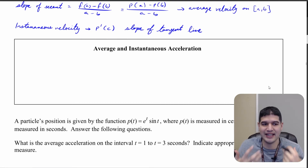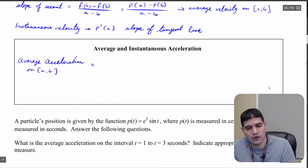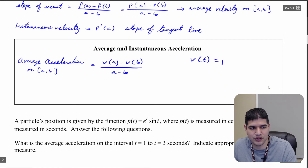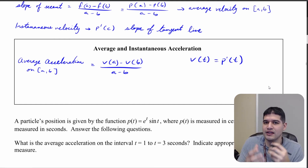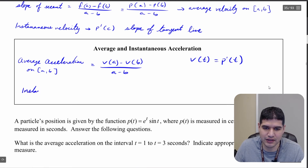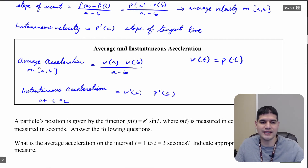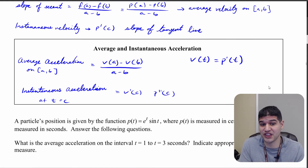We can make the same connections for acceleration. Average acceleration on the interval a to b is velocity at a minus velocity at b over a minus b. Keep in mind that velocity at time t equals p prime of t, so if you only have the position function, just take its derivative to get velocity. Instantaneous acceleration at time c is v prime of c, which is also p double prime of c — the second derivative of position.